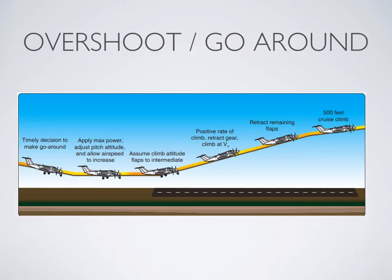Since a picture is worth a lot, this one from the FAA demonstrates the flight pattern of an overshoot quite well: full power, airspeed, climb, clean up flaps and continue on.